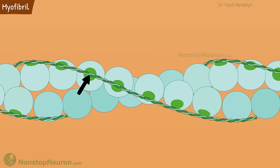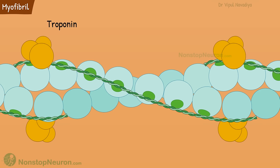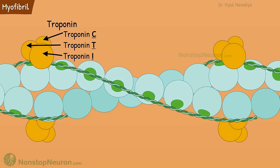The tropomyosin thread itself is also a double helix. You can see that it covers the binding site on actin molecules. So that was tropomyosin. Finally, we have troponin. It attaches the tropomyosin to actin. It is made up of three subunits named troponin C, troponin T, and troponin I.